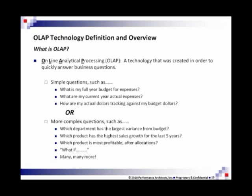Or maybe some more complex questions such as: Which department has the largest variance from budget? Which product has the highest sales growth for the last five years? Which product is most profitable after allocations? Or any kind of what-if situation, such as: What happens to my bottom line if I hire 10 more people? What happens if revenue goes up 5%? What happens if we win — or lose — that big deal? Any what-if type of situation you could think of, this tool is designed to help you answer those questions.